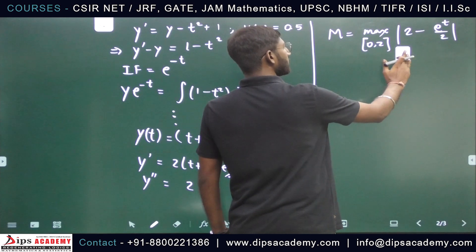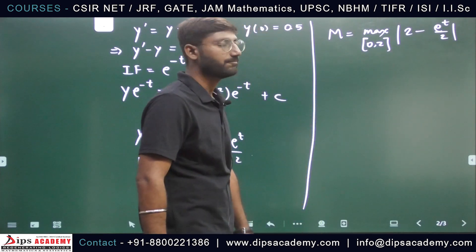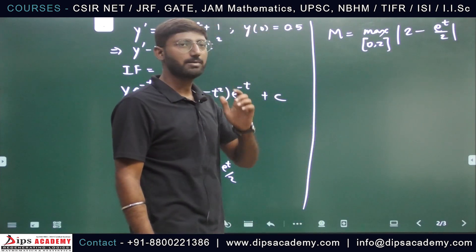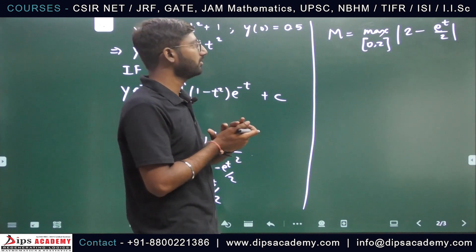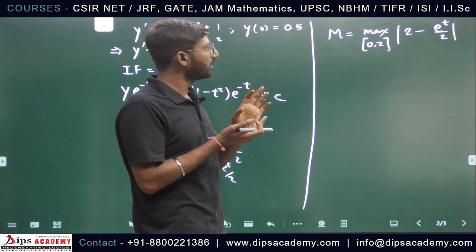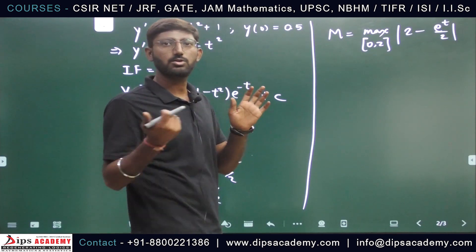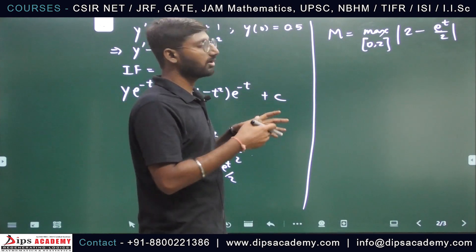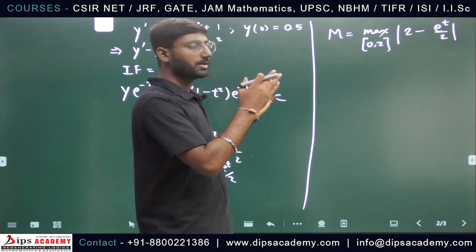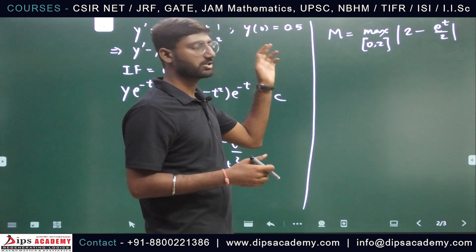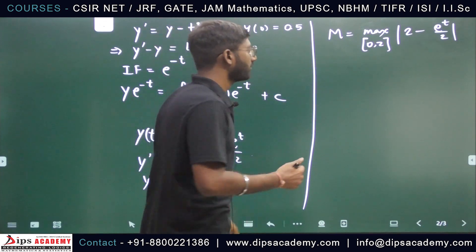Now let's talk about maximum of this. Where will it be? So 2 minus e^(t/2), if I just consider this, 2 minus e^(t/2) is decreasing over 0 to 2, right? But I have mod.